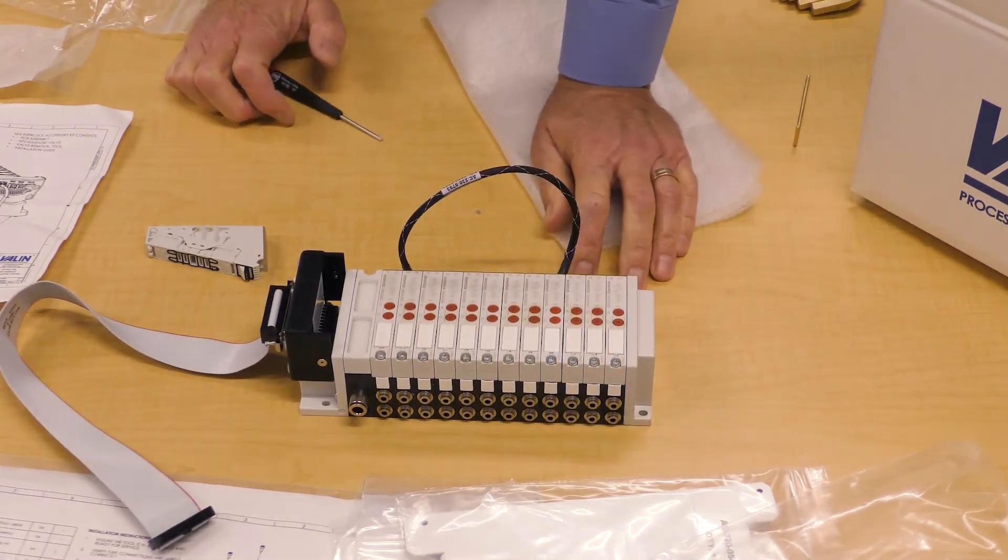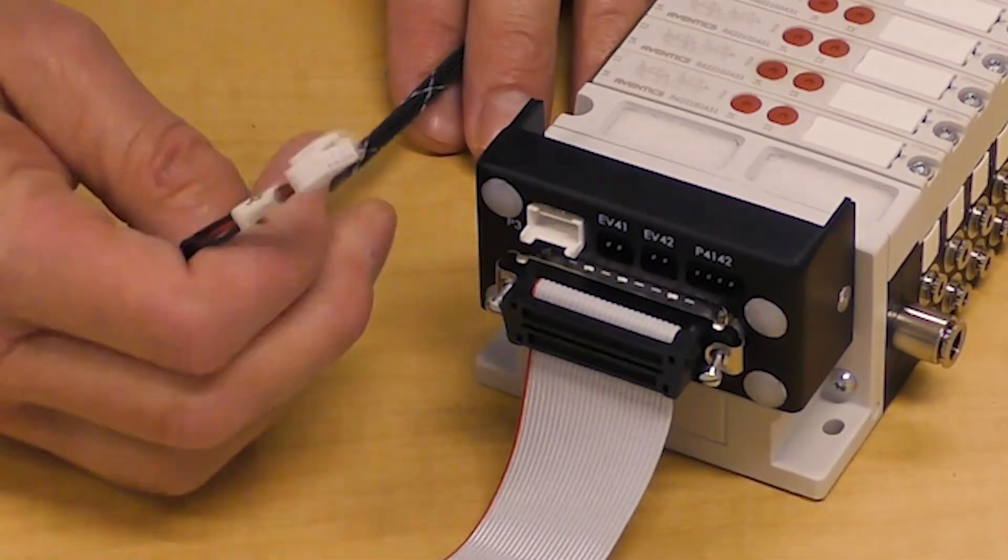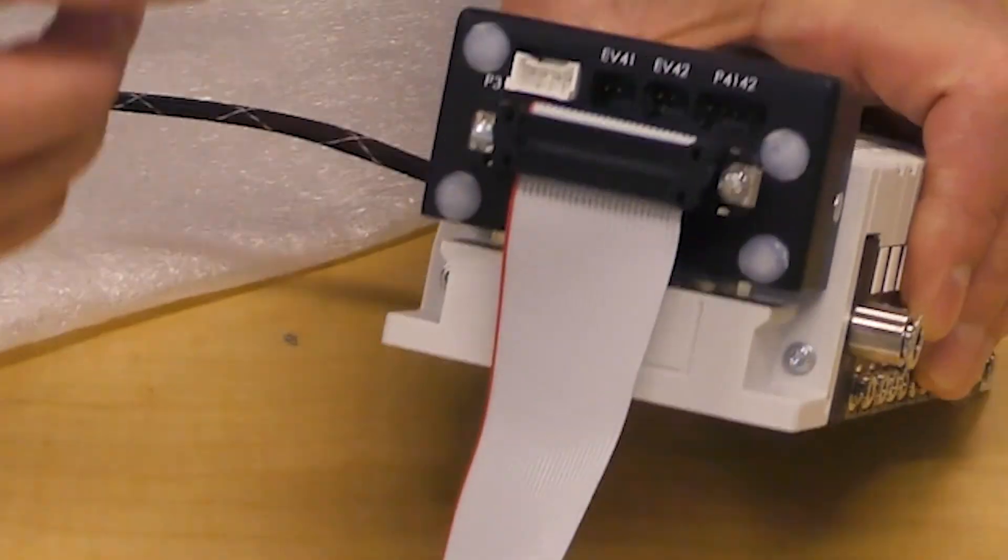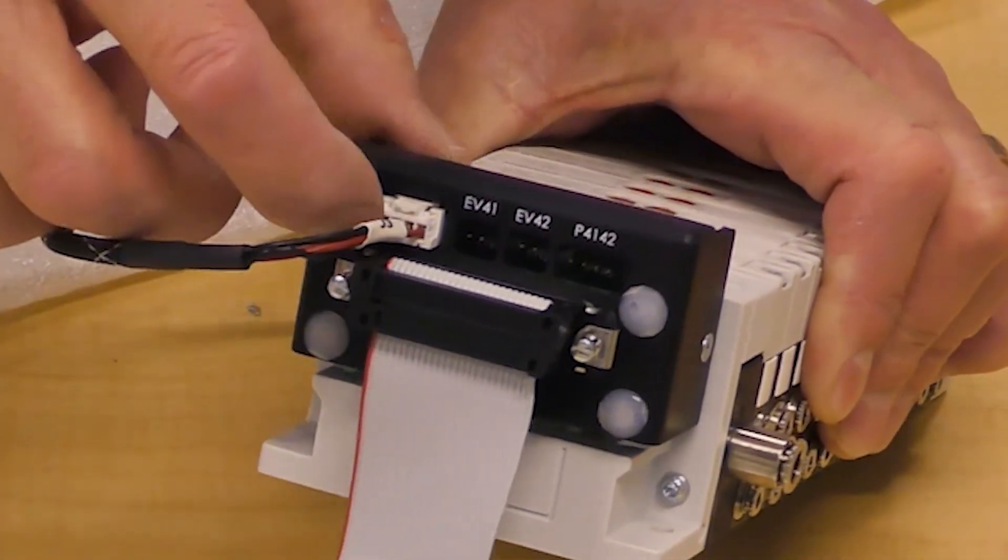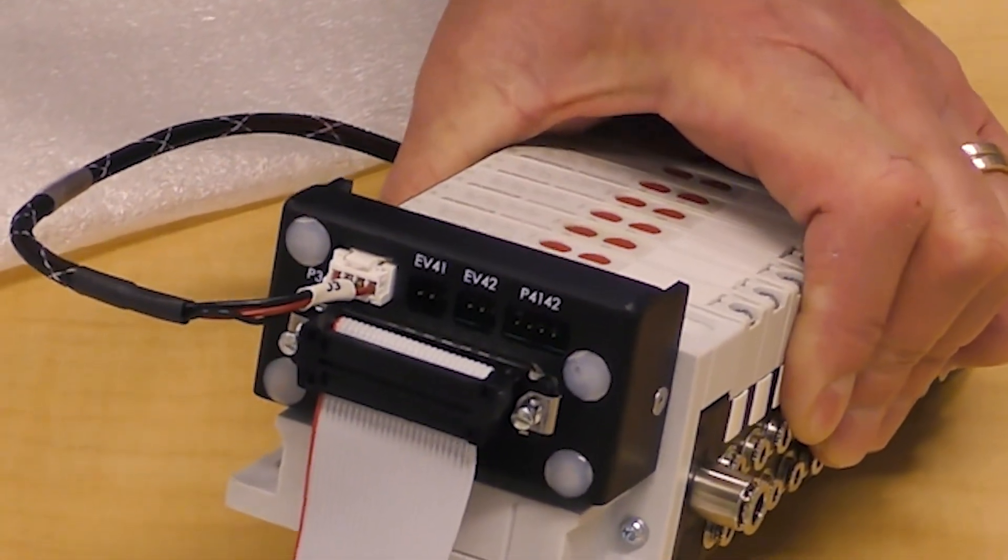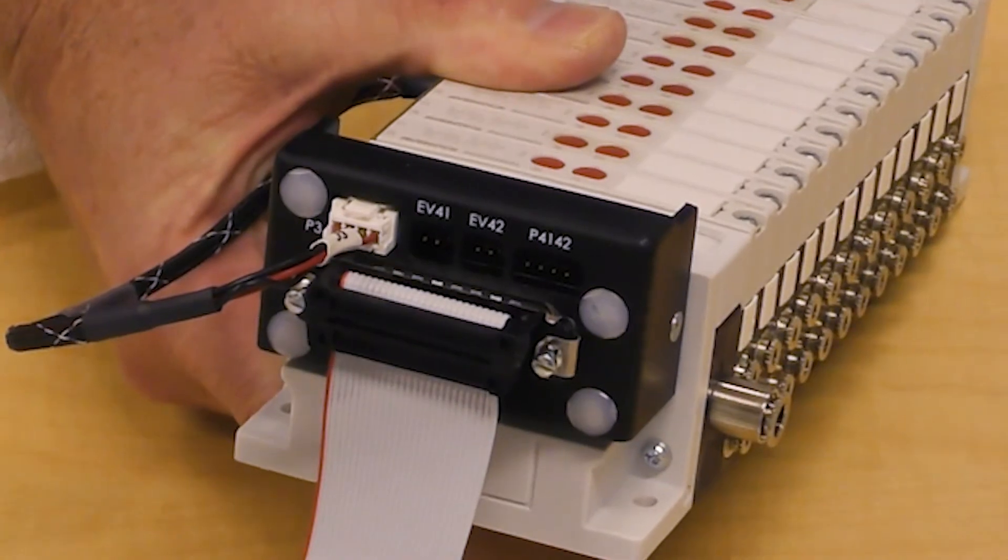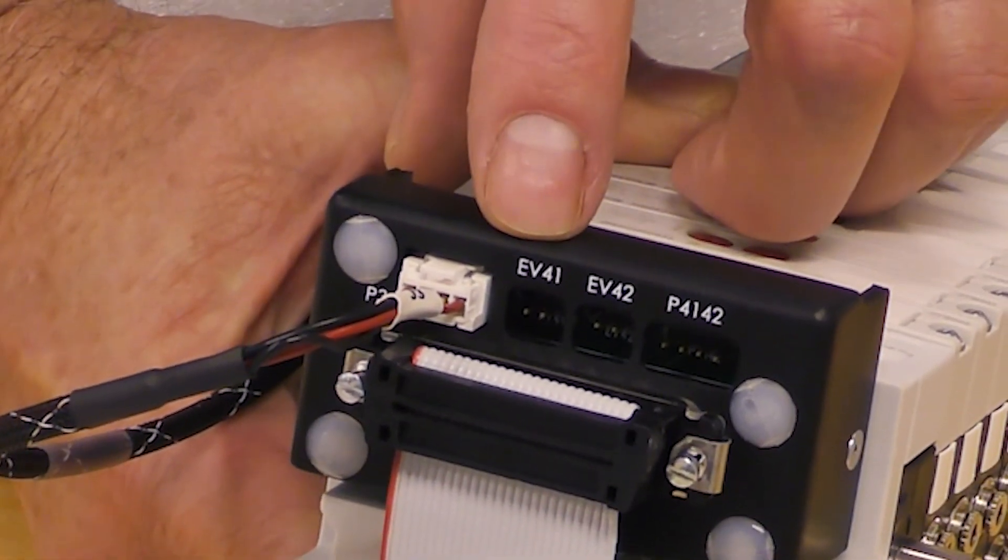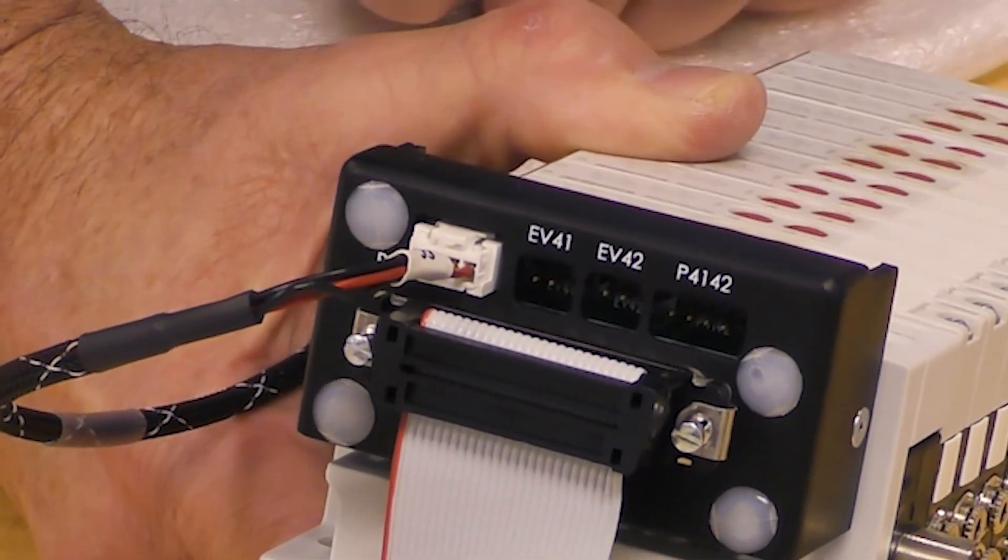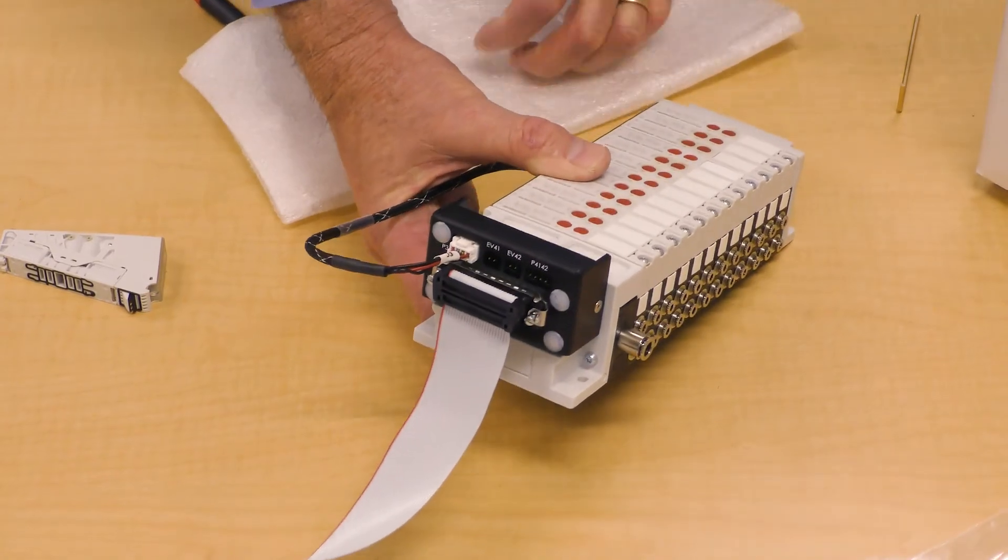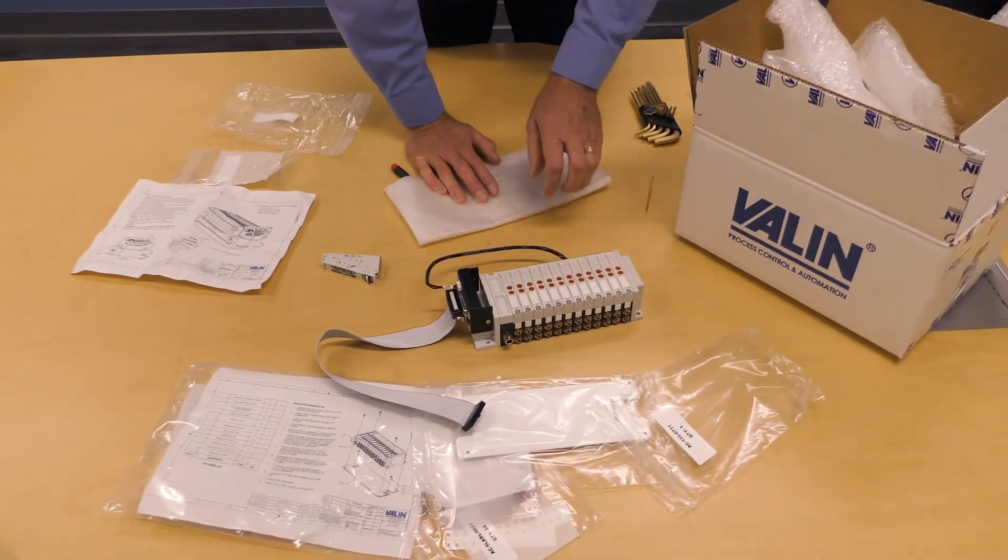Now we would dress this around. This is labeled J3. J3 plugs into the P3 position. Push it in all the way until you hear it click, and that means it's latched in. Now these connections here are from the existing harness assembly on the Centura tool. You would simply plug in EV41, EV42, and P4142 from the existing tool harness. That completes the installation of the NF3 interlock accessory kit on the Centura gas box manifold.